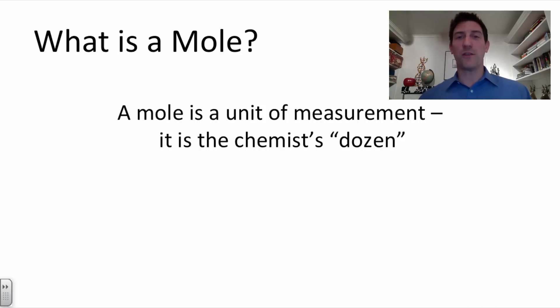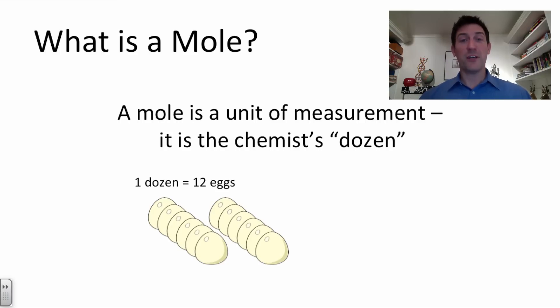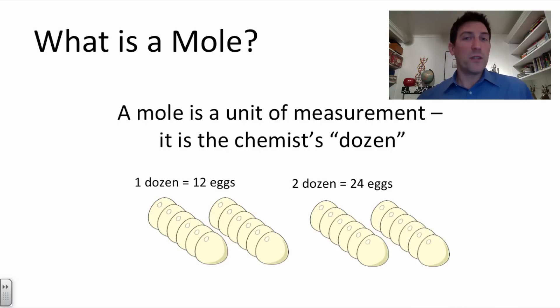Well a mole is just a unit of measurement so it's similar to a dozen only it measures things that are very small. Now people tend to think this gets really complicated but if you just go back and think about what a dozen is it makes it a little simpler to draw an analogy between them. For example if we have one dozen eggs we have 12 eggs. There they go. If we have two dozen eggs we have 24 eggs. Now a mole is very similar but a mole isn't a dozen, it's just a similar concept.